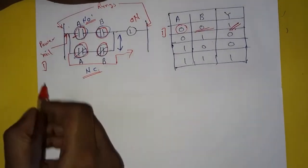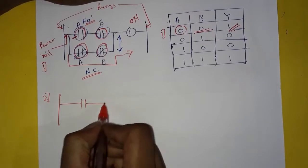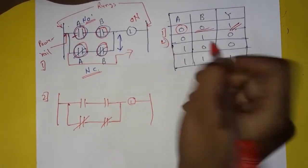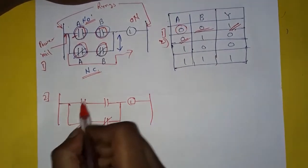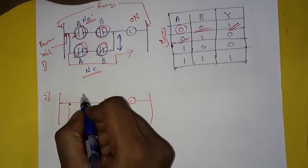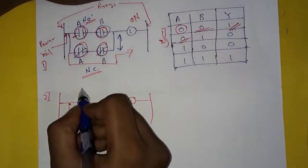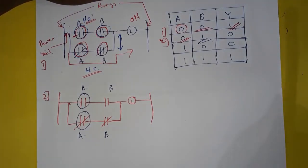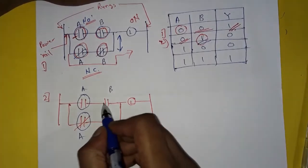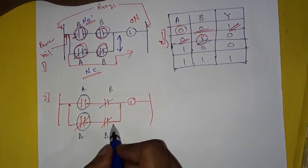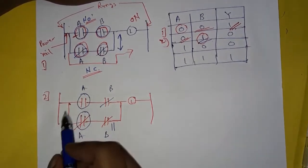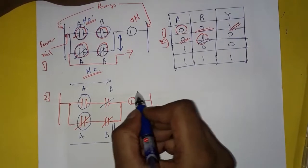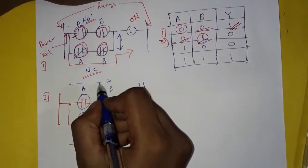Now the second condition. A is de-energized, so it remains as it is — normally open here and normally closed here. B is energized, so its contact gets closed here and its contact gets open here. In this case, the current will not flow from either path towards the lamp, so the lamp will not glow. It is in off condition, represented as 0.